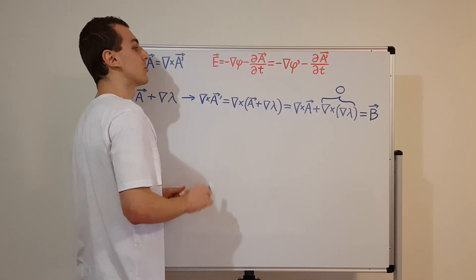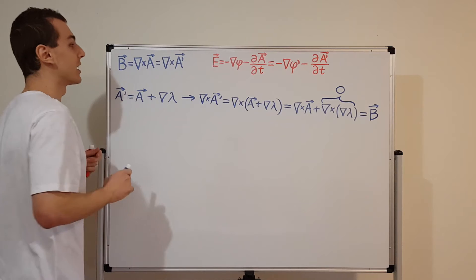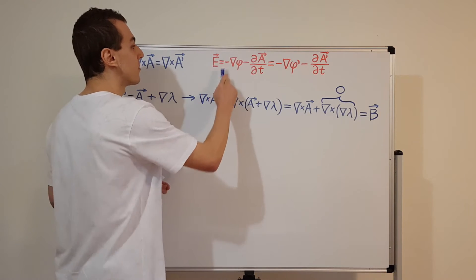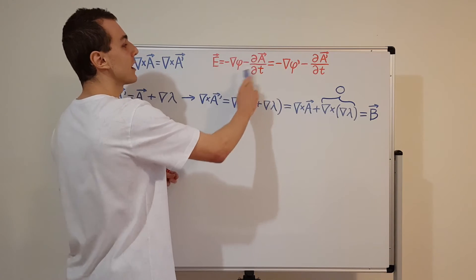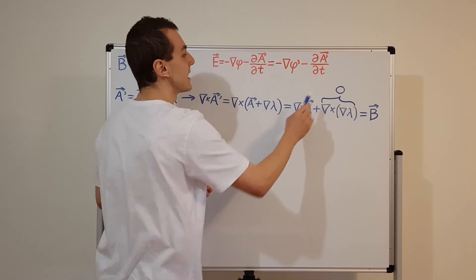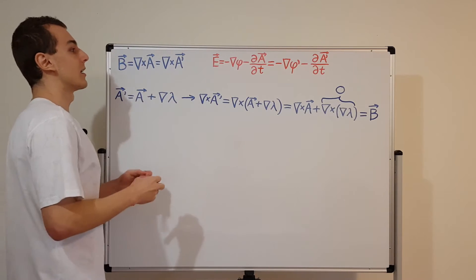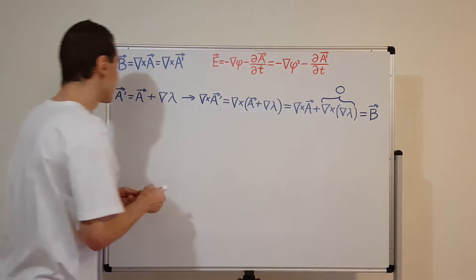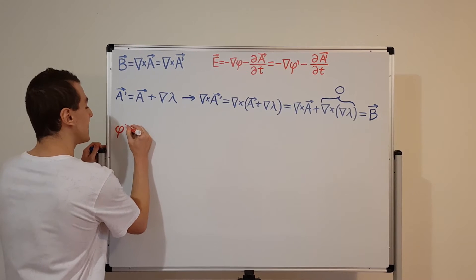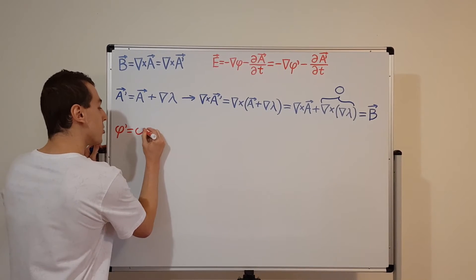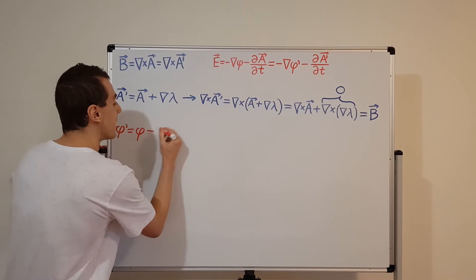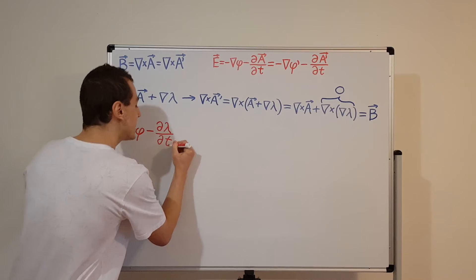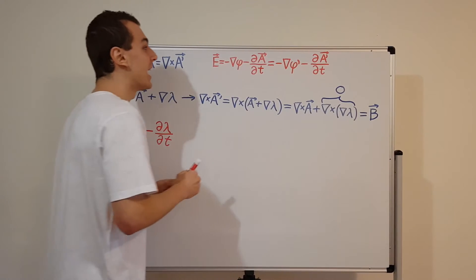Now we have to sort out phi. How does phi have to transform in order to maintain the same electric field? The answer is that phi prime has to equal the original phi minus the partial time derivative of lambda. This will guarantee that we get the same electric field, as I'll show by substituting it into the expression.